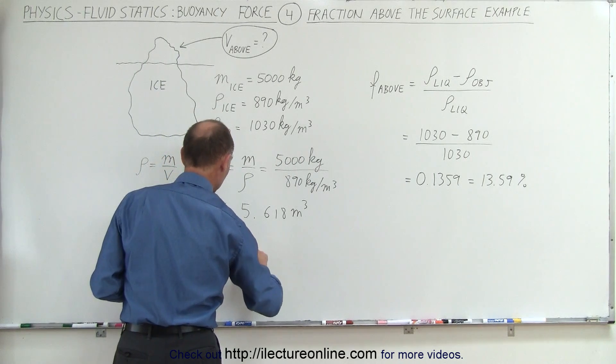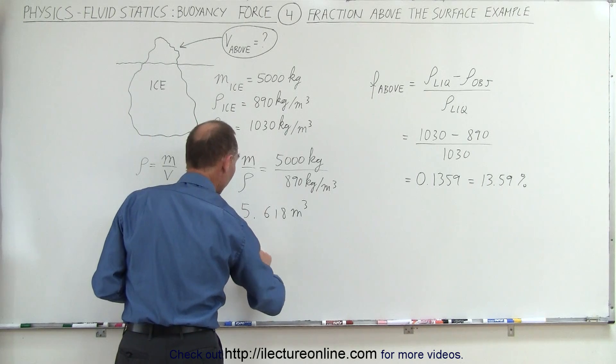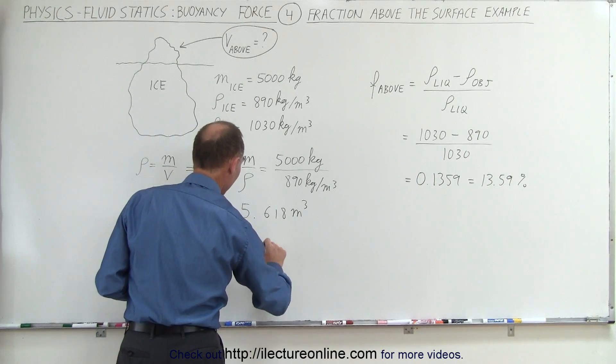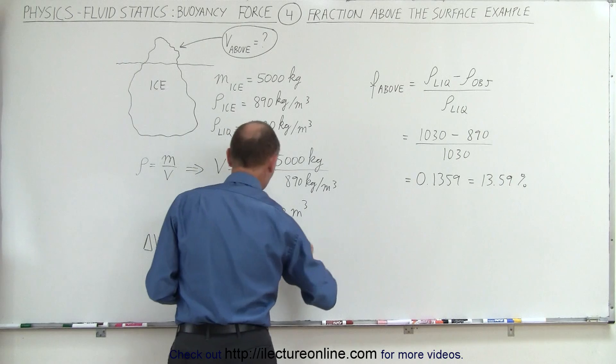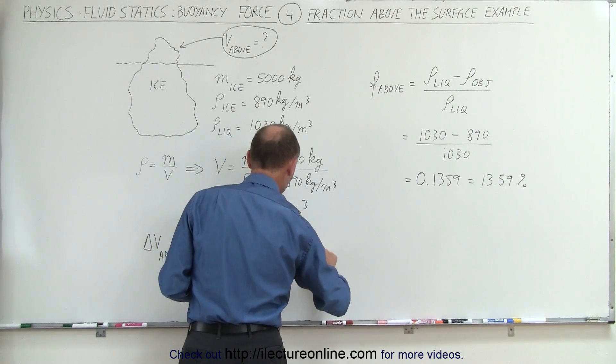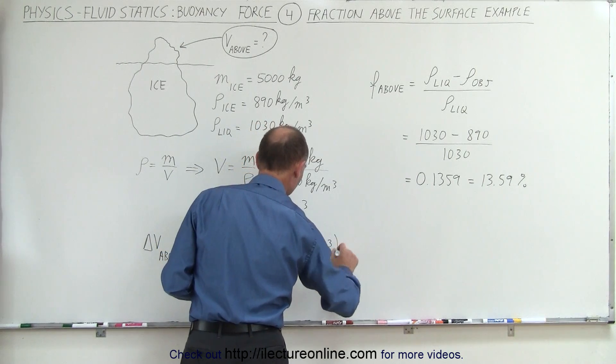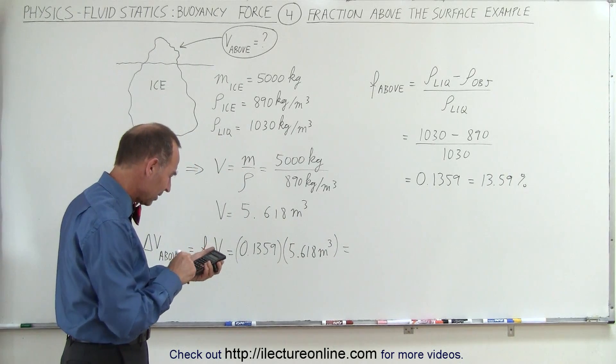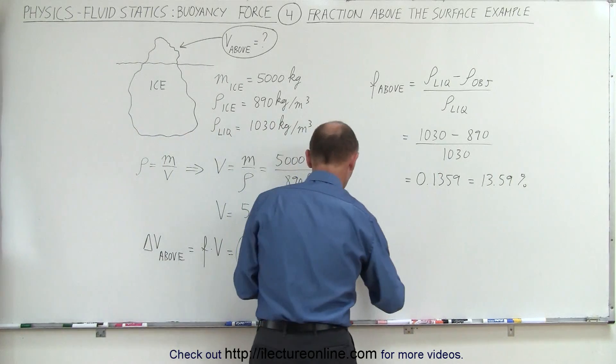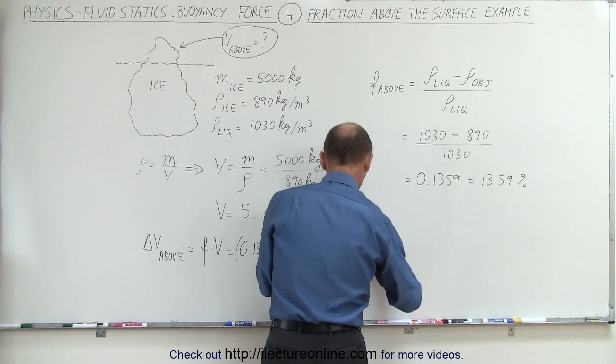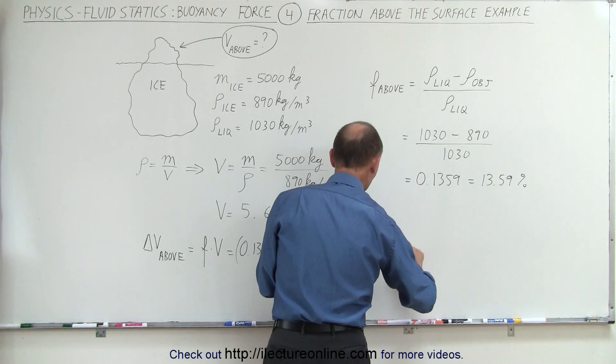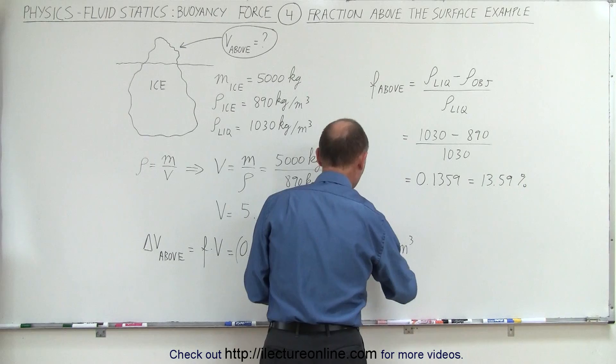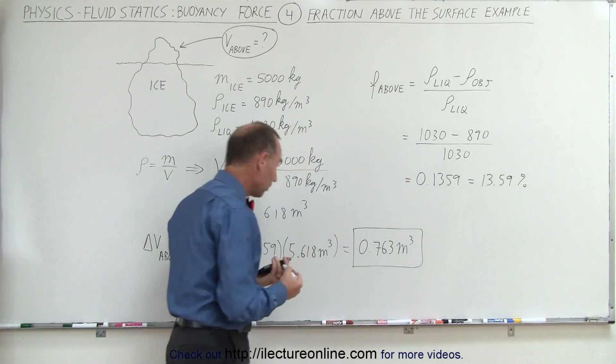This equals the fraction above the surface times the volume of the iceberg, which is 0.1359 multiplied by 5.618 cubic meters. 0.1359 times 5.618 equals 0.763 cubic meters, which is the amount of the iceberg above the surface.